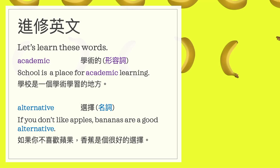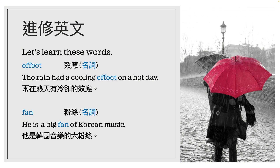我们现在一个字一个字来看。Academic，学术的，形容词。School is a place for academic learning. 学校是一个学术学习的地方。Alternative，选择，名词。If you don't like apples,